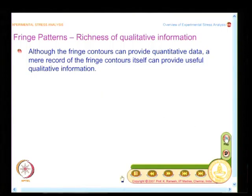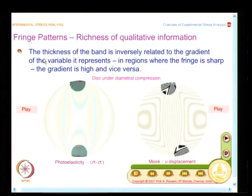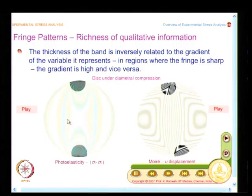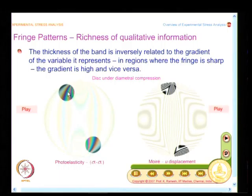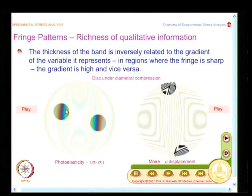One of the things you could see is that the fringe is a band, and if you look at the fringe patterns closely, are the bands of uniform thickness? The thickness of the band is inversely related to the gradient of the variable it represents. I have a fringe pattern from photoelasticity — because photoelasticity has information in colour, a coloured fringe pattern is taken — and I also have a fringe pattern in moiré. We will have a closer look at how the fringe thickness varies. Go back and look at how that fringe contour is not of the same thickness; the thickness changes.